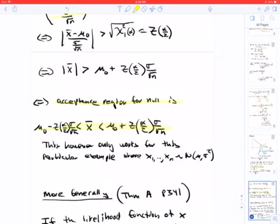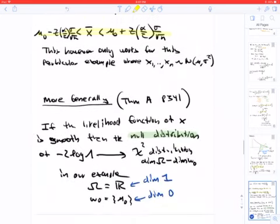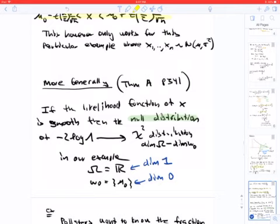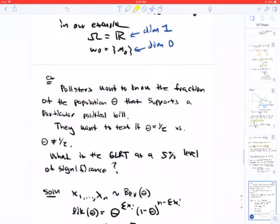Unfortunately, this last thing that we did with x-bar here only works for this particular example. But more generally, we were on the right track with the minus two log lambda, because minus two log lambda converges to a chi-square distribution with degrees of freedom dimension omega minus dimension of little omega naught. In our previous example, omega was the real numbers, which has dimension one, and a single point has dimension zero.